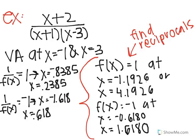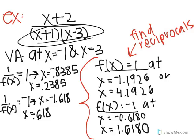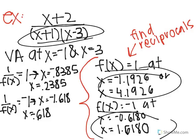An example is there's a vertical asymptote at x equals negative 1 and x equals 3 on this. So you're going to find where the points are 1, negative 1. And I found these points right here and here.